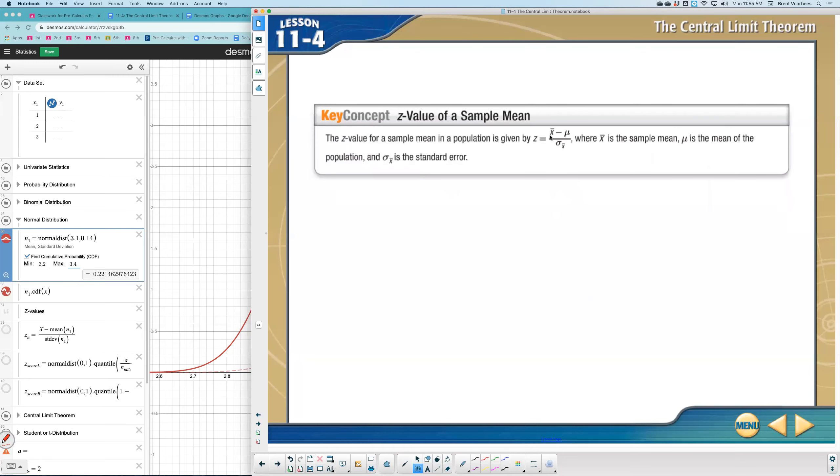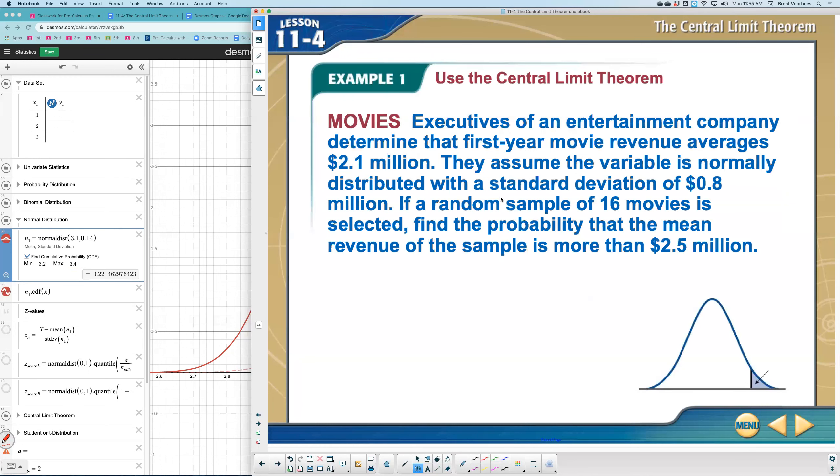The z value, very similar to the formula we saw earlier in the bell ringer, will be x bar, the sample mean, minus the original mean or perceived mean, divided by the new standard deviation, or what could be called the standard error. So with that, we have a few formulas here.